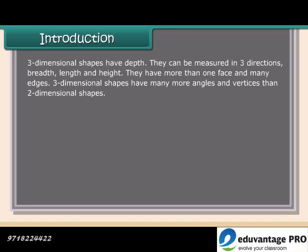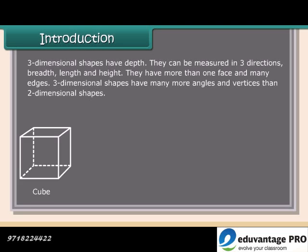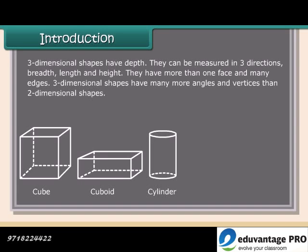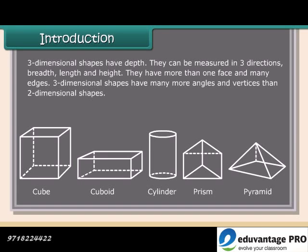Three-dimensional shapes have depth. They can be measured in three directions: breadth, length, and height. They have more than one face and many edges. Three-dimensional shapes have many more angles and vertices than two-dimensional shapes, such as cube, cuboid, cylinder, prism, pyramid, etc.